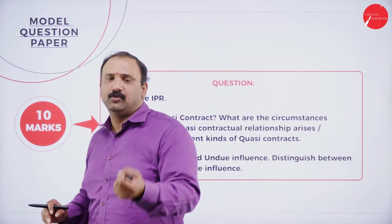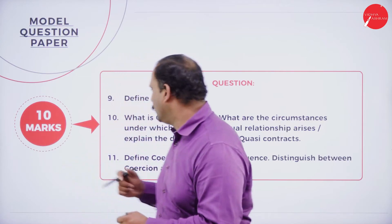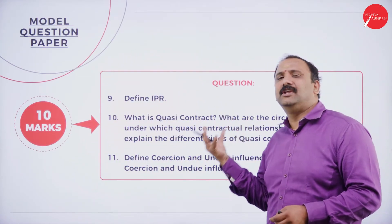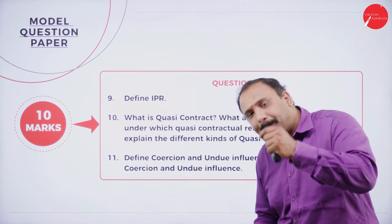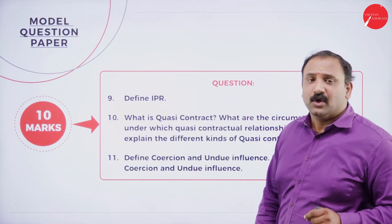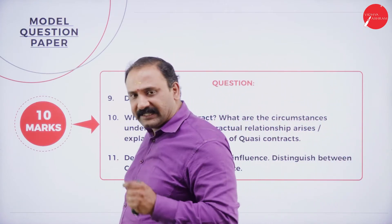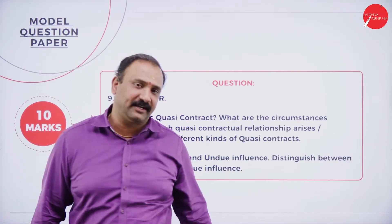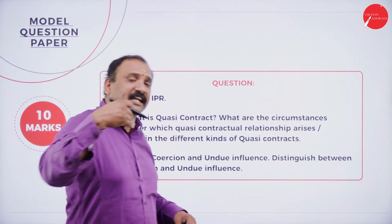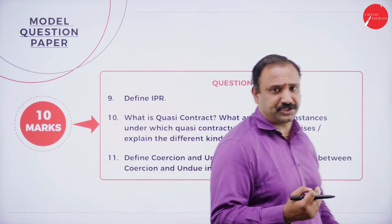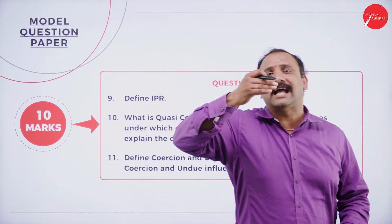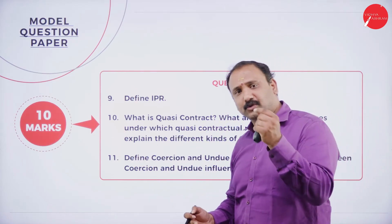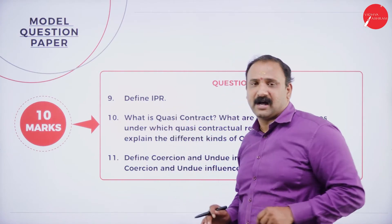A quasi contract is not a real contract — it is just a part of a contract. You are not directly in a contract nor directly liable, but you are a part of it by virtue of your position. Quasi contracts do not have a direct legal implication, but you will still be subjected to certain terms and conditions as a part of the contract.